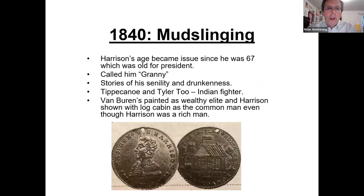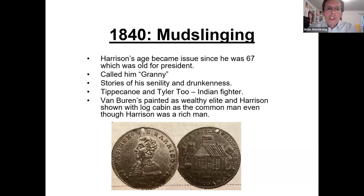Going back to the 1840 election, Harrison's age became an issue since he was 67. They called him 'Granny' and spread stories of his senility and drunkenness. The slogan was 'Tippecanoe and Tyler Too,' because he was an Indian fighter in the Battle of Tippecanoe. Van Buren was painted as a wealthy elite while Harrison was shown living in a log cabin as a common man — but actually Harrison was extremely rich and lived in a huge plantation and mansion.